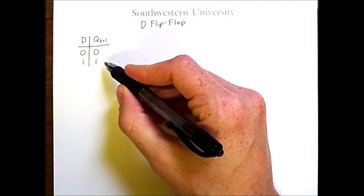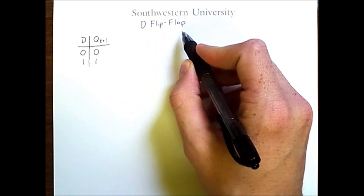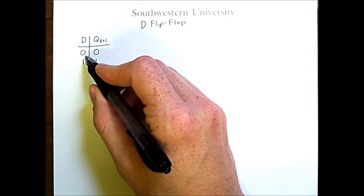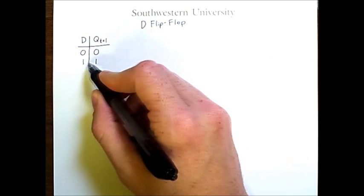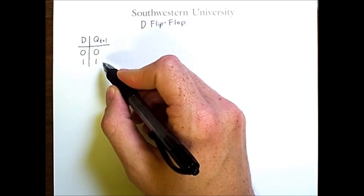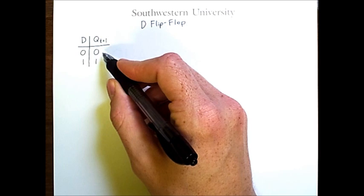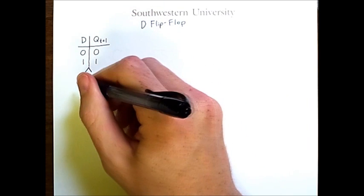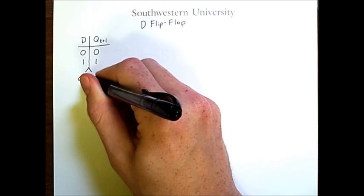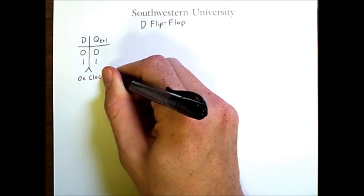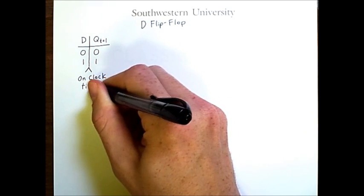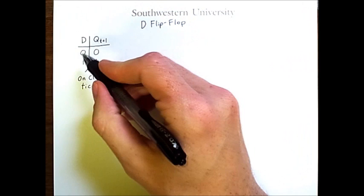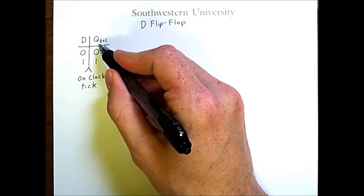Recall that this is the characteristic table for a D flip-flop. It may seem unusual that an input of zero gets an output of zero and an input of one gets an output of one. Why is this circuit so complicated if all it does is give the same value put into it? The important thing to remember is that this transition assumes that a clock tick has occurred. So if the clock gives a value of one at the same time that D is zero, then the next value of Q will be zero.